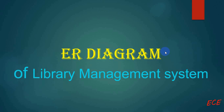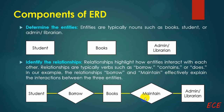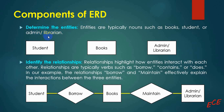Hello everyone, it's been a long time — I hope you're doing well. Today I will show you how to draw the ER diagram of a library management system. Many of you have asked me to provide this. So let's see what the components of an ER diagram are. ER diagram mainly means entity relationship diagram, so we need the component called entity, their relationships, and another thing called attributes.